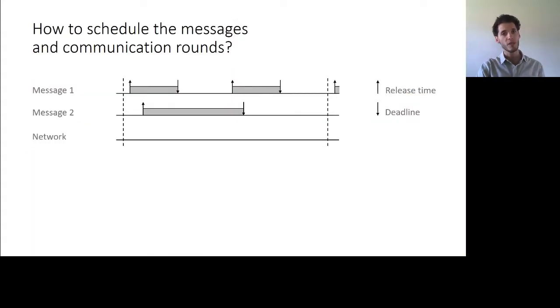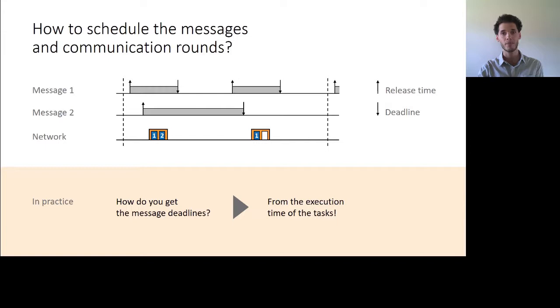So if we forget about the task for a second and we focus for a moment on the scheduling of the messages, we've said that thanks to synchronous transmission, we can see the network as a single shared resource. So it's rather simple to schedule. We have our messages, release time and deadlines, we can then define the right moment to schedule rounds and do the assignment to minimize resource utilization. Well, that sounds very nice, but there is actually a catch that it is not so trivial to know when the release times and deadlines actually are. The reason being that this information actually comes from the scheduling of the tasks.